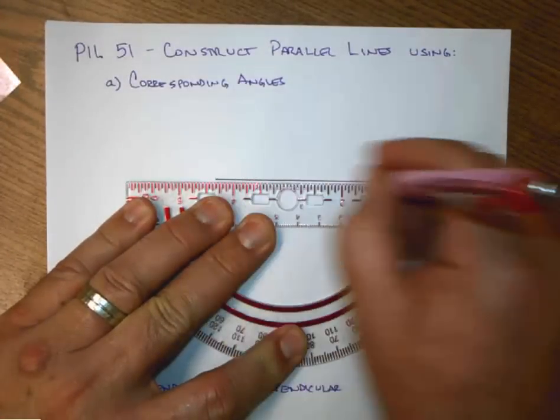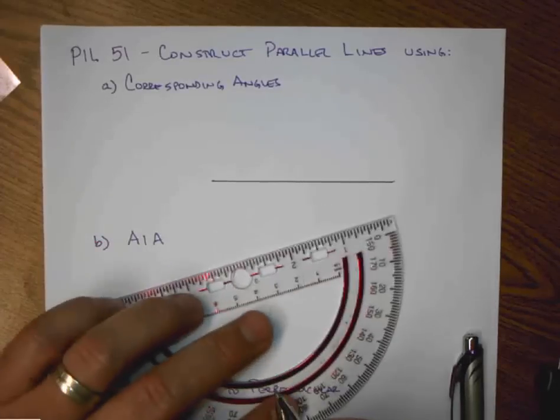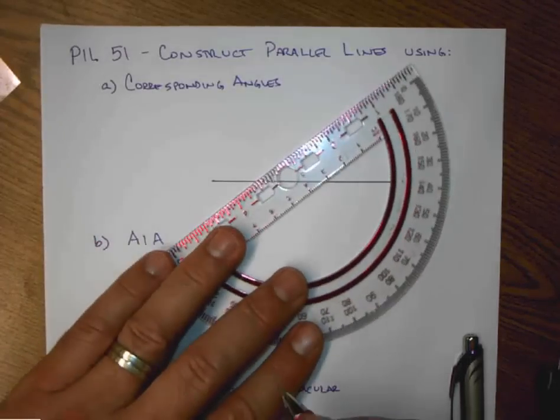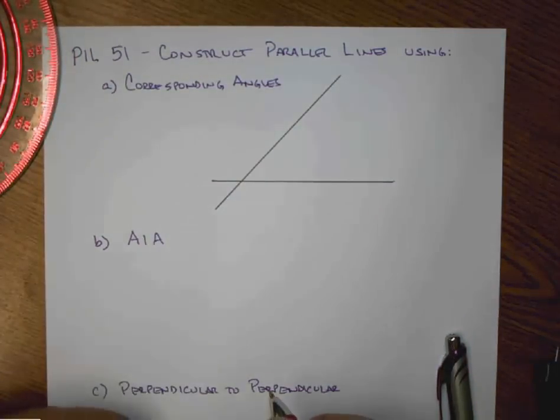If I'm going to construct parallel lines, my first step has to be to have a line that it is parallel to. I'll then draw some other line. It doesn't matter. This is my transversal, and it doesn't really matter at what angle that goes.